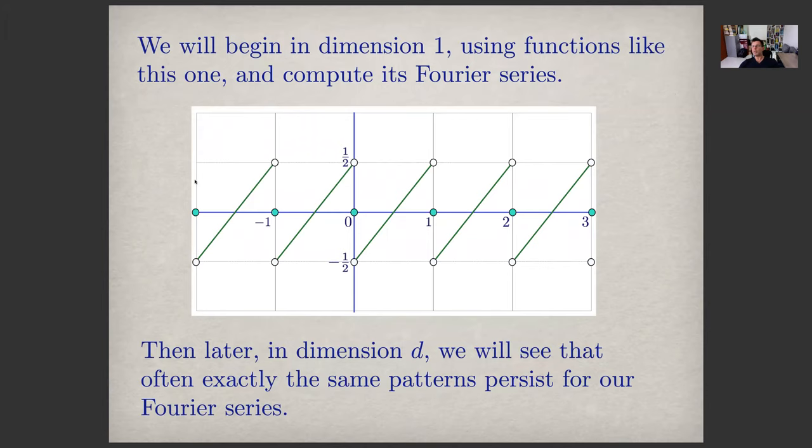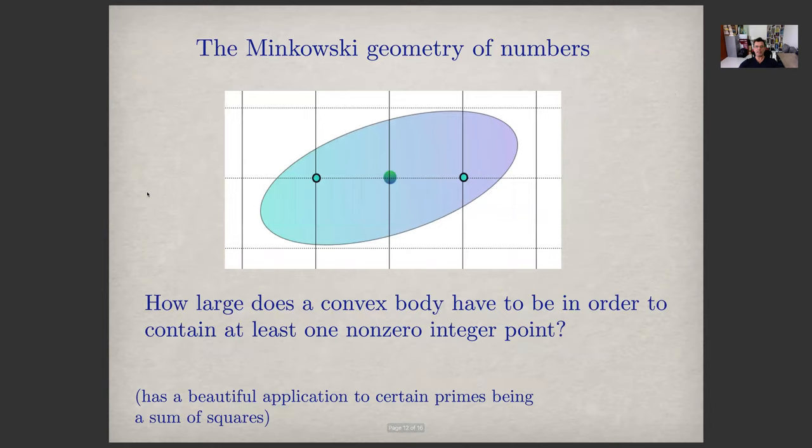In dimension one, we can start with very simple functions, like this one. This one is linear and periodic on the unit interval. And even in such simple cases, the Fourier series are sufficiently interesting that we can bootstrap our way to higher dimensions using information from dimension one, as we will see. Quite often the same patterns in higher dimensions persist using Fourier techniques as they do in dimension one.